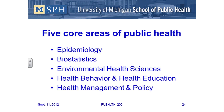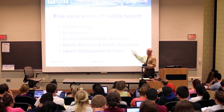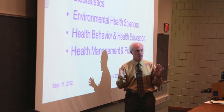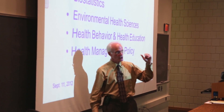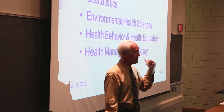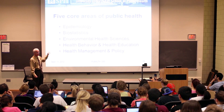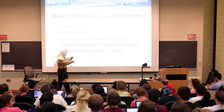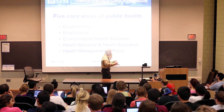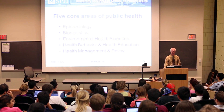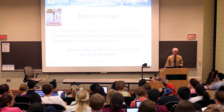There are five core areas of public health, and they happen to correspond to the five departments in this school. Whatever school of public health you attend, you'll find slightly different organizational structures, but each one of these areas is offered in every school of public health because every one of them is central to the field.